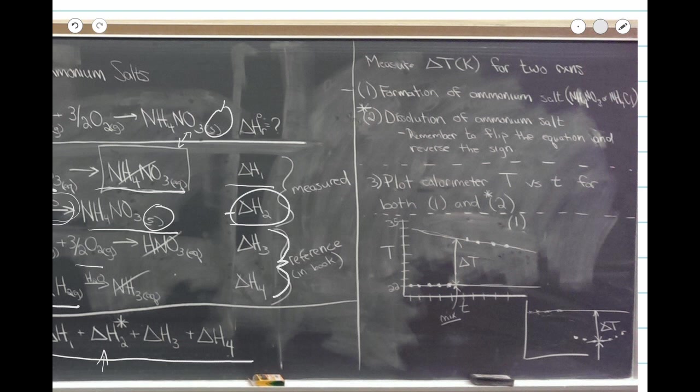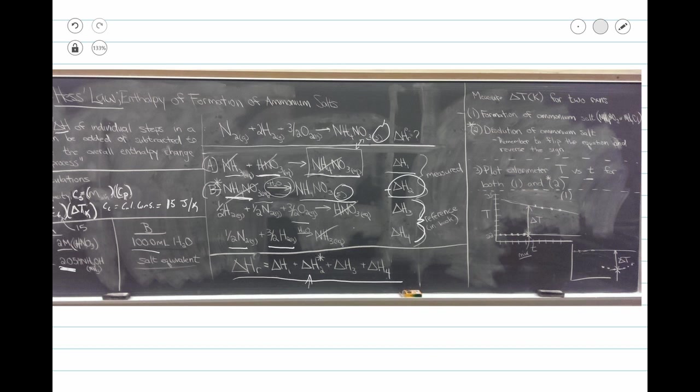In this experiment you're going to record the change in temperature for the first two reactions: first the formation of the ammonium salt in solution, then the dissolution of the ammonium salt. Remember to flip the equation and reverse the sign when you get that ΔH. Then you'll plot calorimeter temperature versus time for both Reaction 1 and Reaction 2. If you have any questions, please reach out to your TA, head TAs, or Dr. Vitarelli.